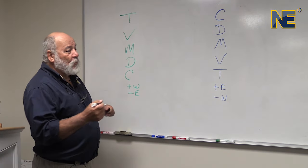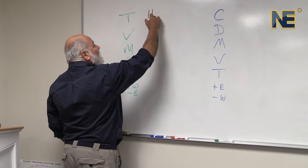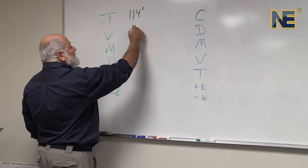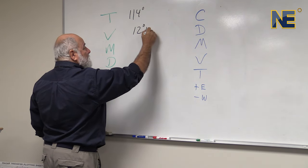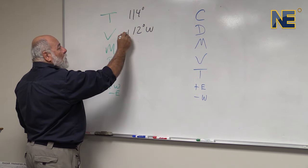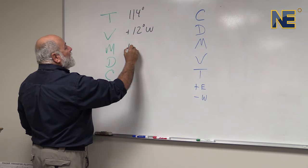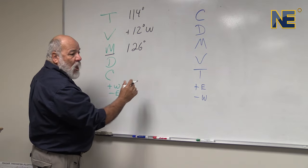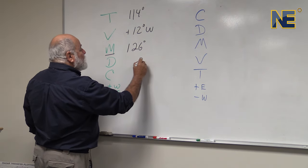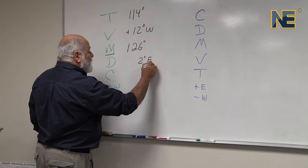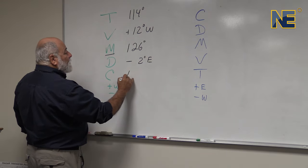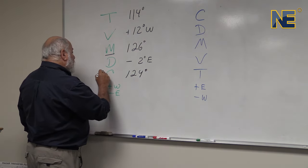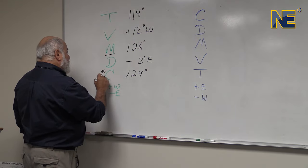Let's suppose that we had a true course of 114 degrees and the variation for the area on the chart is 12 degrees west. We know that we're going to add west when going from true to compass, so we would get 126 degrees for our magnetic. If the deviation chart for our vessel is 2 degrees east, we know we would be subtracting two, giving us 124 degrees for our per ship's compass course to steer.